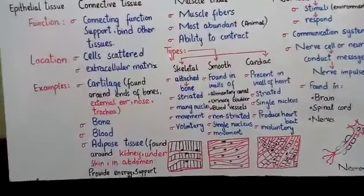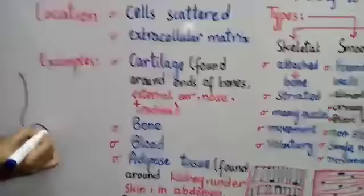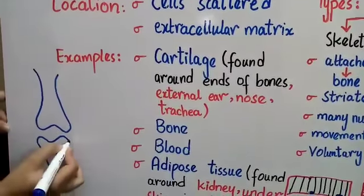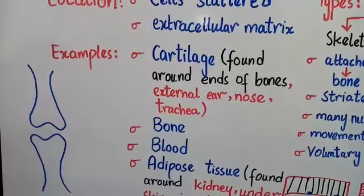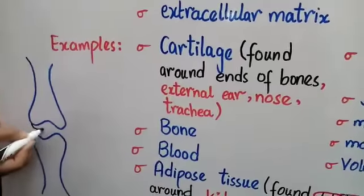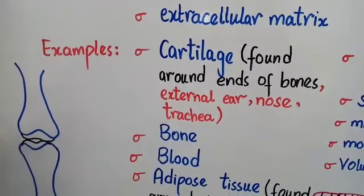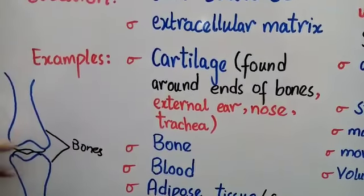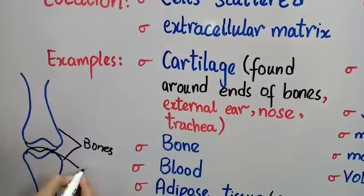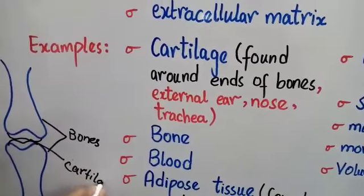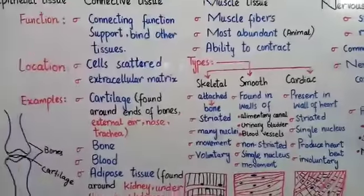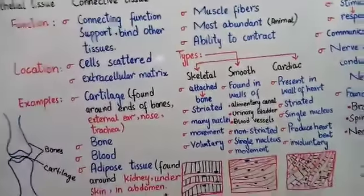In our body, cartilage is found where two bones meet — that point is the joint, and in the center is the cartilage. Cartilage is also known as a shock absorber. It is an elastic structure that allows movement. So this cartilage is elastic and you can easily move.